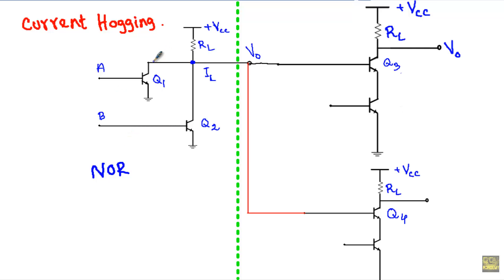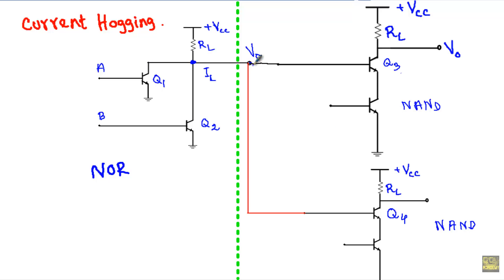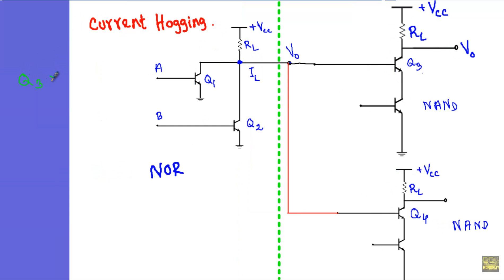This DCTL NOR gate is driving two other similar DCTL NAND gates. The collector terminals of transistors Q1 and Q2 are coupled at the output terminal. This output terminal is connected to the base terminal of transistor Q3 and to the base terminal of transistor Q4.